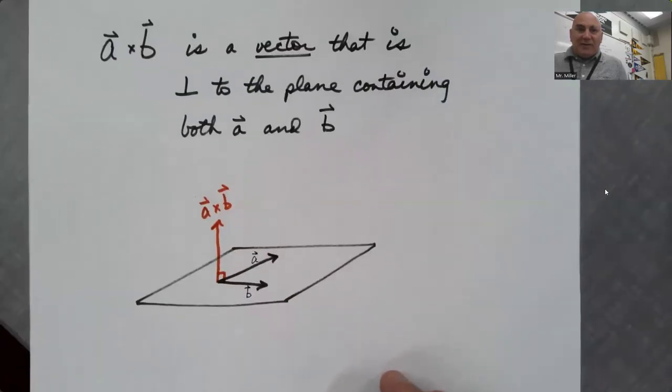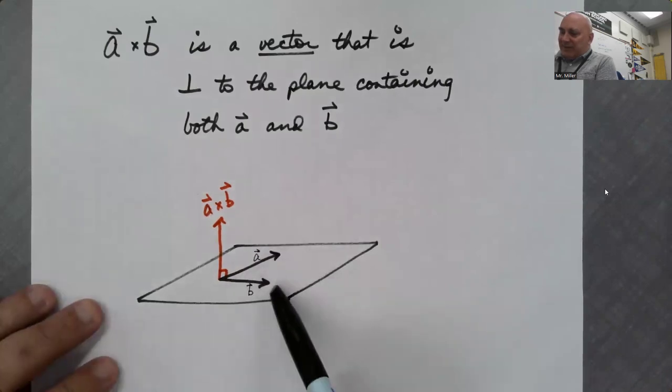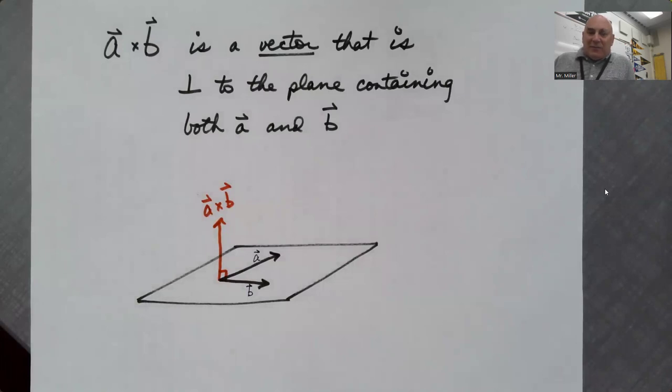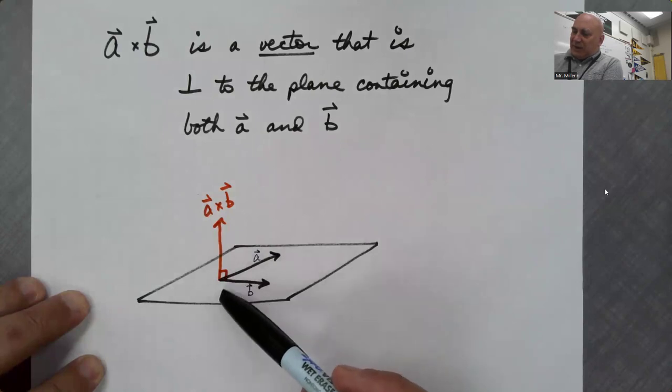How does that work? Let's see. My wonderful artistic ability. So here's A and B. They're on a plane, maybe the table. And if you cross A and B, actually, I think I drew this wrong. I think if we crossed A and B in this case, A cross B would go down. It would be perpendicular to the plane, but it would be downward.